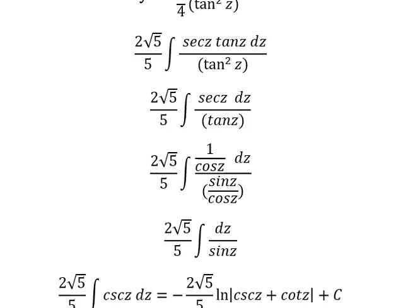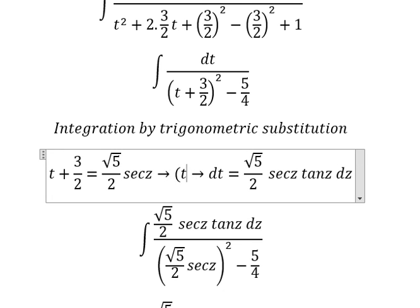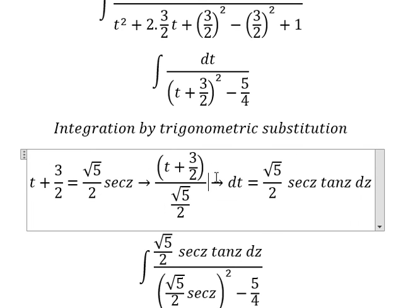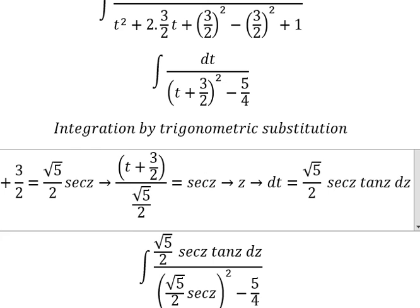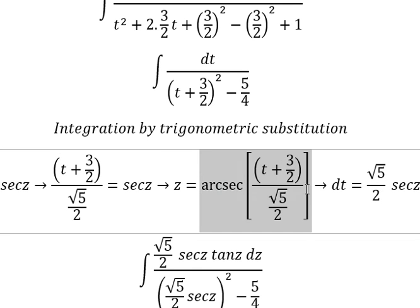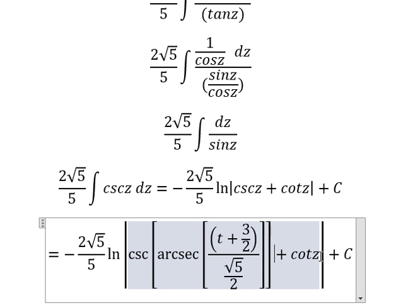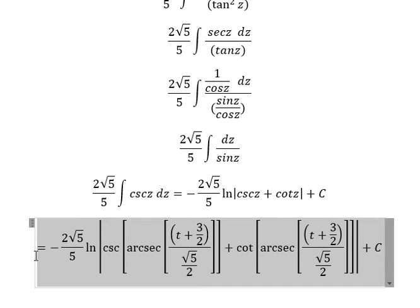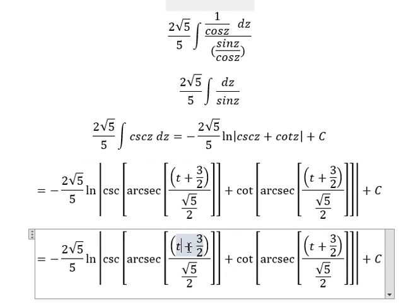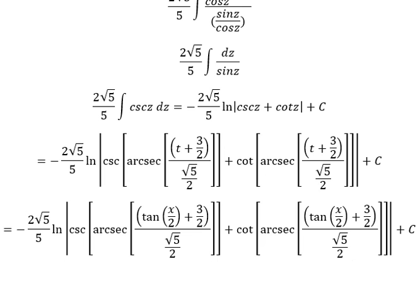Now for z, we need to go back and divide both sides by the square root of 5 over 2, so z equals arcsecant of this expression. We substitute this back in to replace z, and t equals tan(x/2). This is the final answer. Thank you for watching.